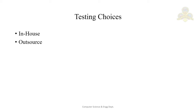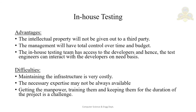For example, a company in the US can outsource development to a company in India, and that Indian company can then outsource the testing activity to another agency in the same or a different country. We are talking only about the testing choices here, not the development choices. There are two types: in-house testing and outsourcing.